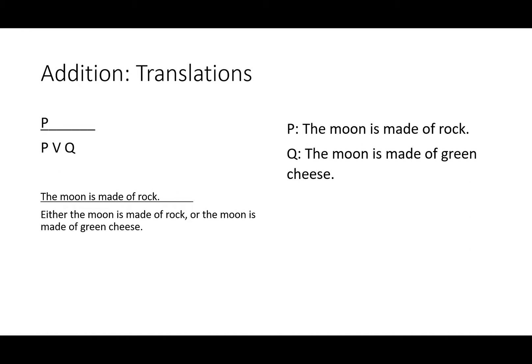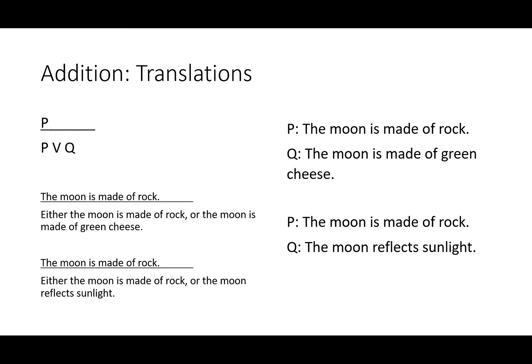We can also add something true using addition. The moon is made of rock. The moon reflects sunlight. The moon is made of rock, therefore either the moon is made of rock or the moon reflects sunlight. Again, a little bit odd when we turn it into English, but it's not a lie. Q can be true or false or something that we have no information about. Because P is true, the other half of the disjunction is irrelevant. That's why addition works at all.